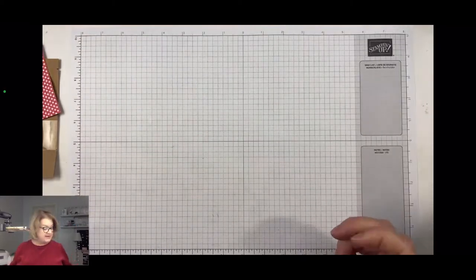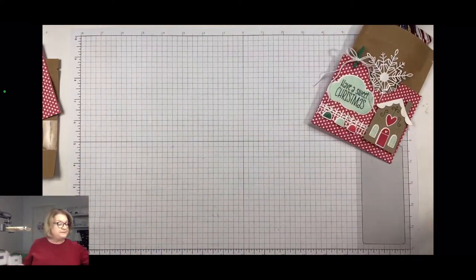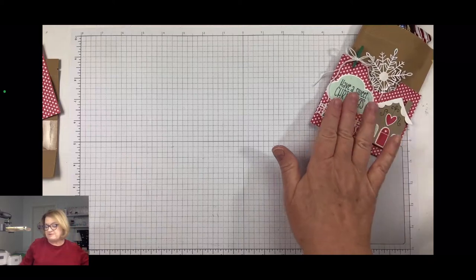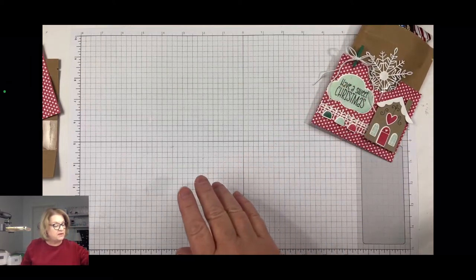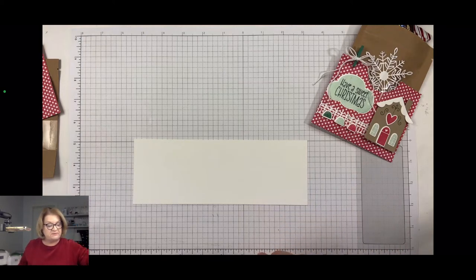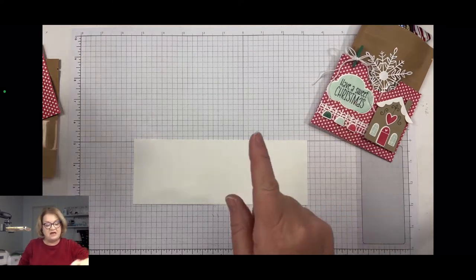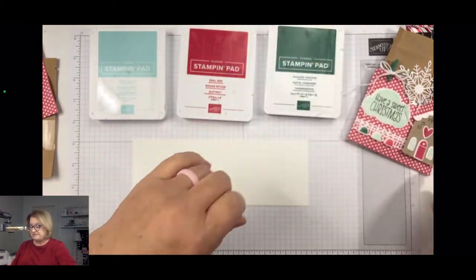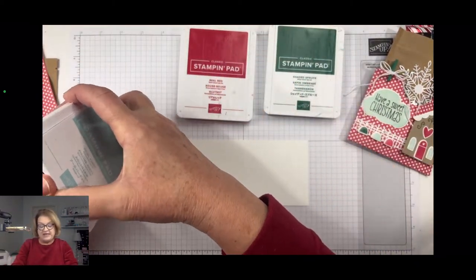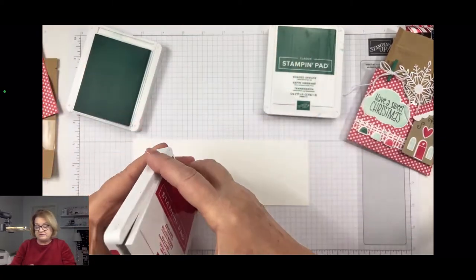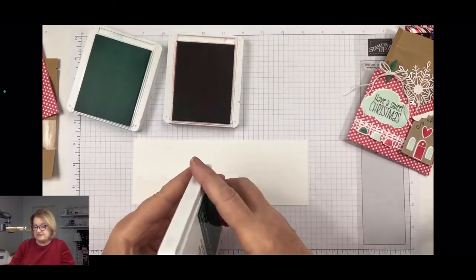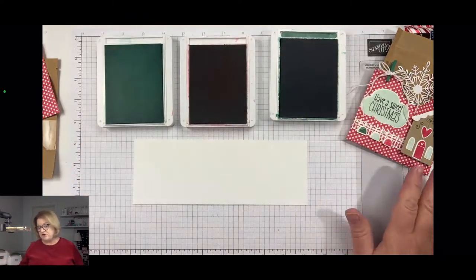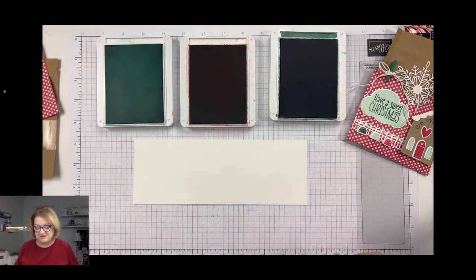And while that adhesive dries, we'll set it aside and we can go ahead and add our embellishments. Now I am using the sweet gingerbread bundle from Stampin' Up for my little cottage and my little cloud. So we are going to stamp those. I'm using some memento ink for the sentiment. I'm using some pool party, some real red, and some shaded spruce. I just thought the green and the reds would look good together, and they are also colors pulled out from that designer series paper. I figure if the artists at Stampin' Up know which colors go together, so I'm not going to question them.